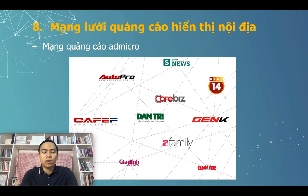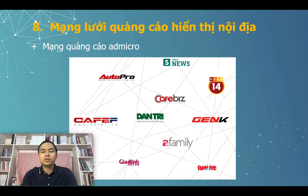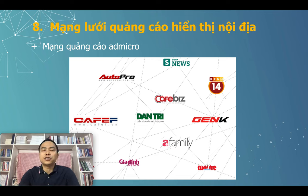Hệ thống AdMicro quảng cáo trên khoảng hơn 50 website lớn có lượng truy cập lớn. Chúng ta có thể hiển thị dạng các đường link truy cập, và khi có một lượt click thì chúng ta có được truy cập về website hoặc landing page, từ đó có được lượng khách hàng nhất định. Ưu điểm của các mạng lưới quảng cáo này là bằng tiếng Việt, của doanh nghiệp Việt Nam, dễ thao tác, dễ sử dụng. Tuy nhiên nhược điểm là hiệu suất quảng cáo không cao bằng Facebook, Google hay YouTube.